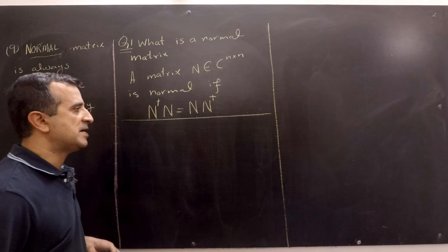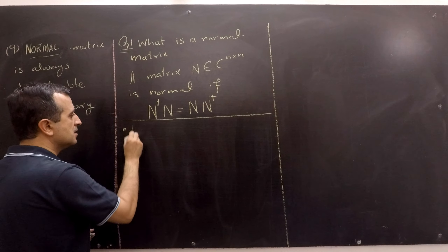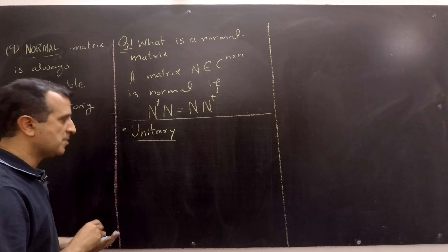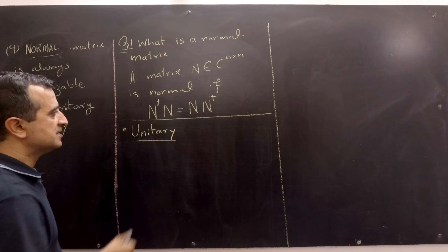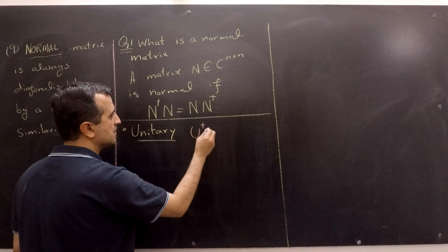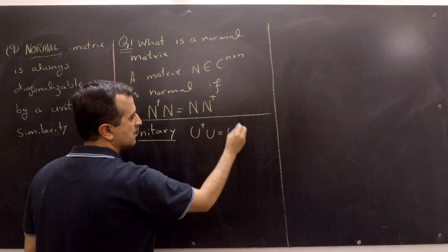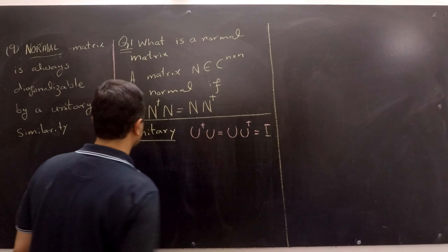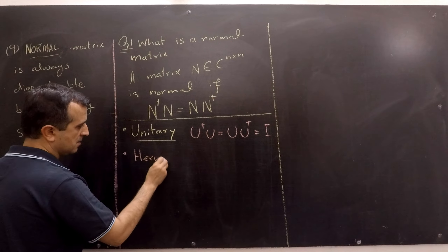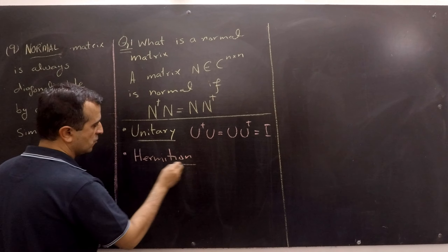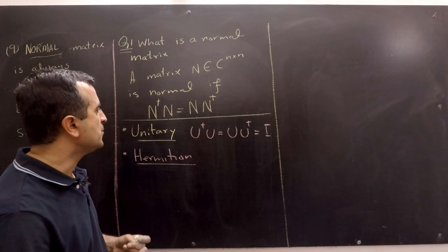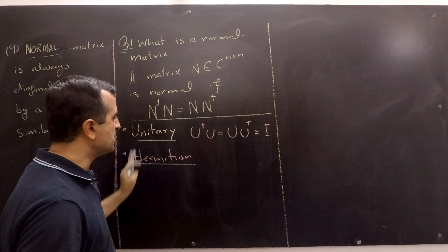Examples of normal matrices are: number one, obviously, unitary matrices. Unitary matrices are normal matrices because for unitary matrices, as well as for Hermitian matrices, this definition is always fulfilled. Secondly, Hermitian matrices are also normal matrices. So when we prove this theorem for normal matrices, we are also proving it for unitary matrices as well as for Hermitian matrices.